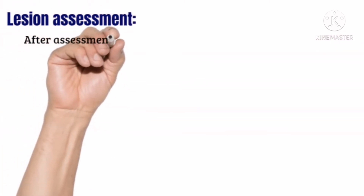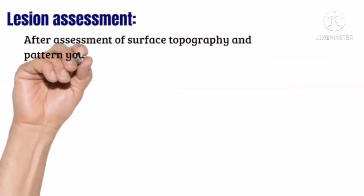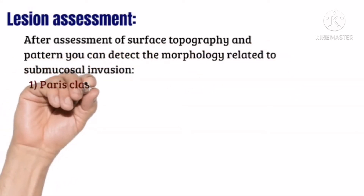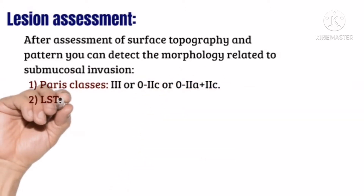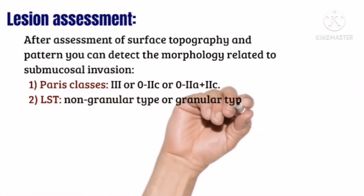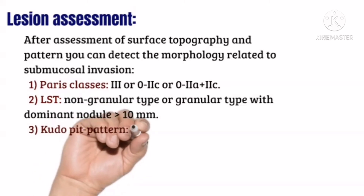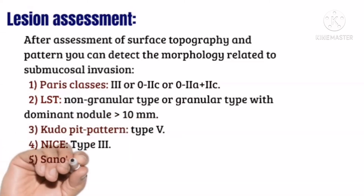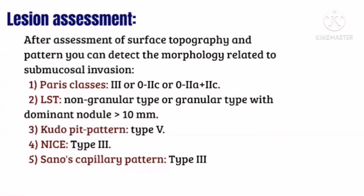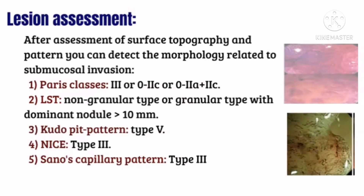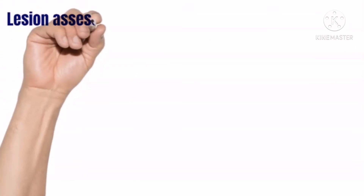After assessment of colonic lesions by surface topography or capillary pattern, you can detect the morphology related to submucosal invasion. Barris classes 03, 02C, or 02A plus 2C, lateral spreading tumor with non-granular type or granular type with dominant nodule more than 10 mm, kudu bit pattern type 5, and nice type 3 or sinus capillary bit pattern type 3.